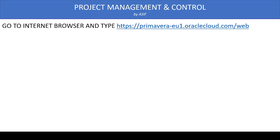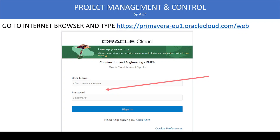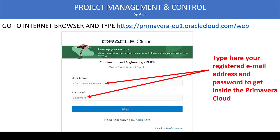Once your company gives you access to Primavera Cloud, you enter the appropriate web address in the browser and it will open the cloud application login dialog box. Open your browser and type: primavera-eu1.oraclecloud.com/web. The sign-in dialog will appear where you type your username — normally your company email address — and the password you created when Oracle sent you the initial setup email.